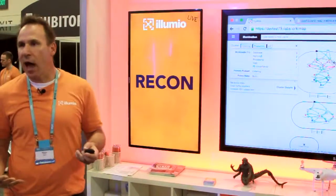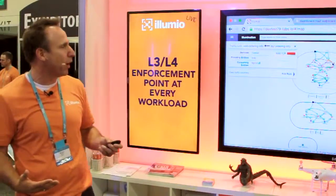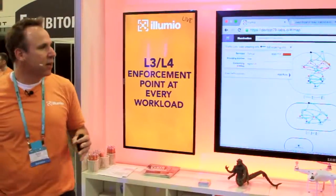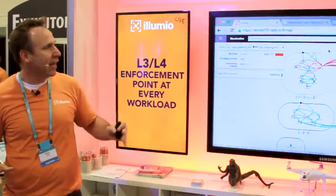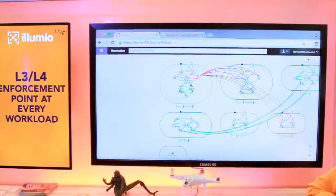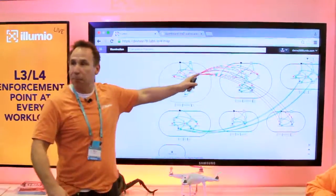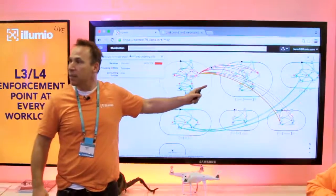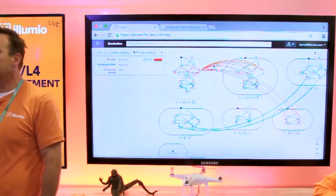With Illumio, you actually have an L3, L4 enforcement point at every single point inside of your data center. So one of these workloads just went out and hit a recon. And not only did we detect that it basically broke policy, but now we can visualize and help you understand what it tried to do. You can see exactly what the bad actor is trying to do.